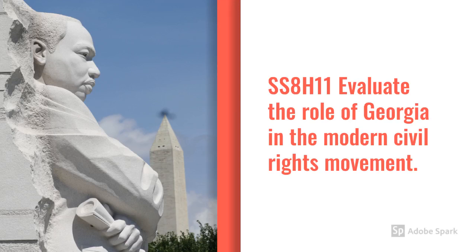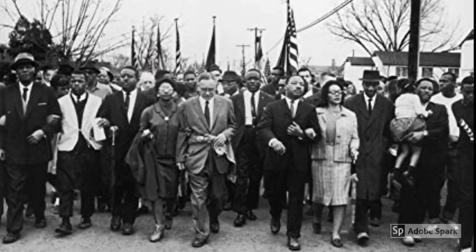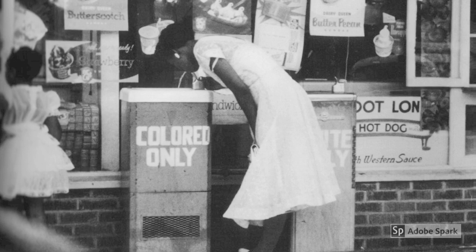In this standard, we evaluate the role of Georgia in the modern civil rights movement. The 1940s and 50s saw a major push by blacks to fight segregation and reclaim the civil rights that were denied them during the Jim Crow era. While the civil rights movement began the moment the southern states passed the Jim Crow laws, the 1940s and 50s were a time of organized and usually peaceful resistance that helped to ultimately end these laws.